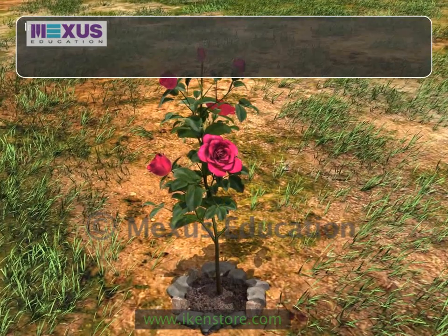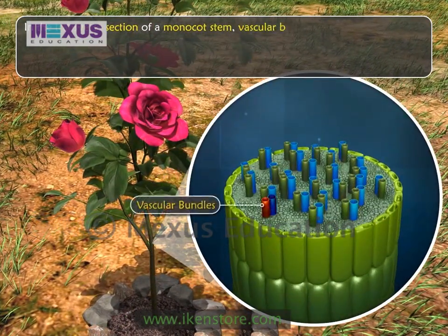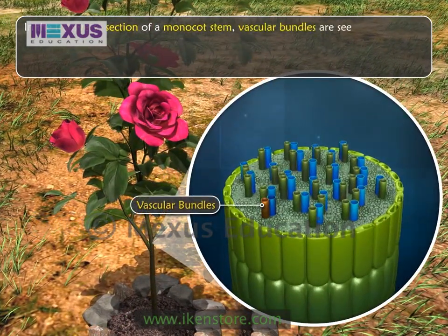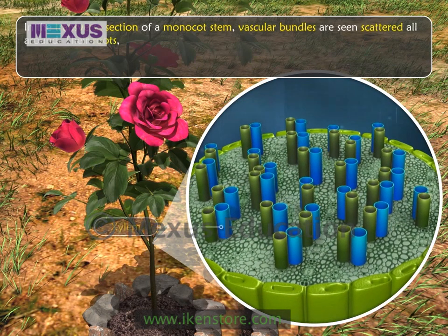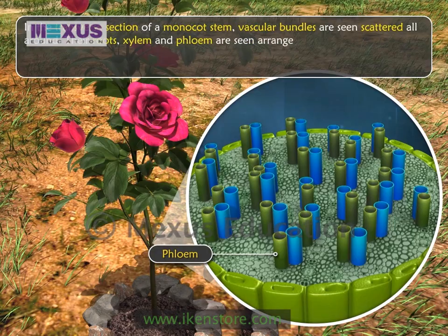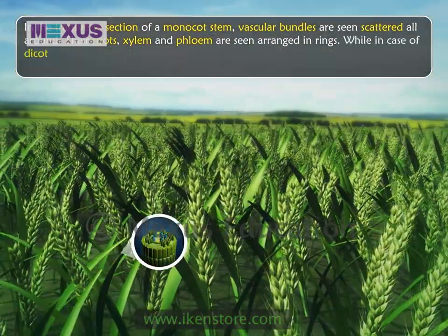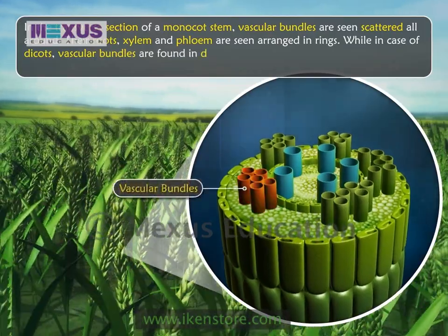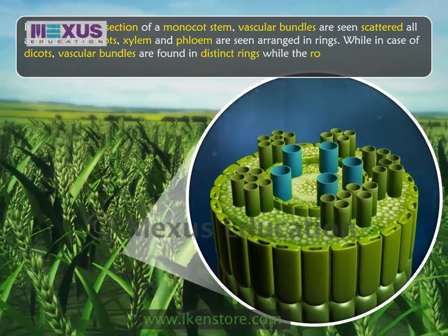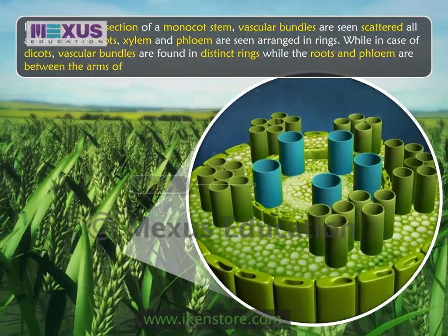In the cross section of a monocot stem, vascular bundles are seen scattered all around. Their roots show xylem and phloem arranged in rings. While in the case of dicots, vascular bundles are found in distinct rings, and phloem is seen between the arms of xylem.